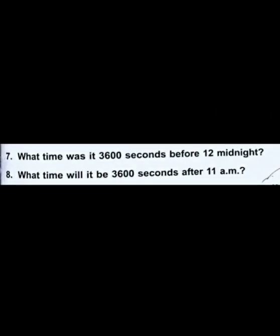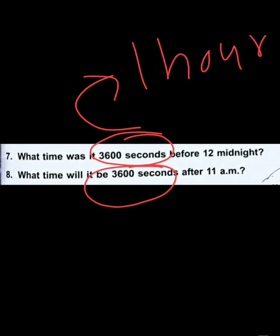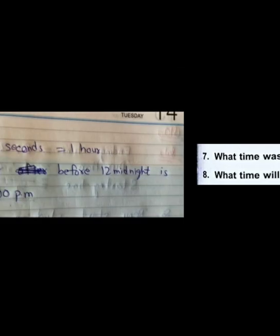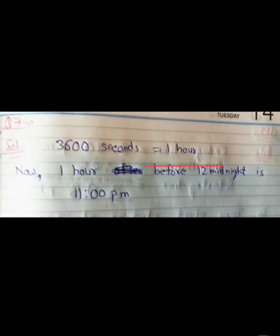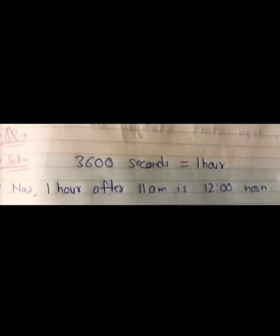Question 7: what time was it 3600 seconds before 12 midnight? Remember, 3600 seconds equals one hour (60 multiplied by 60). So the question becomes: what time was it one hour before 12 midnight? The answer is 11 PM. Question 8: 3600 seconds after 11 AM — one hour after 11 AM is 12 noon.